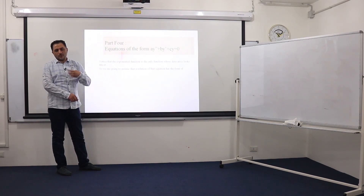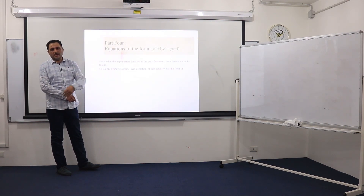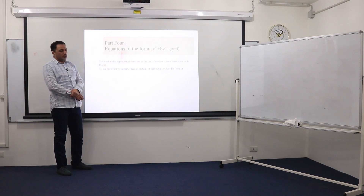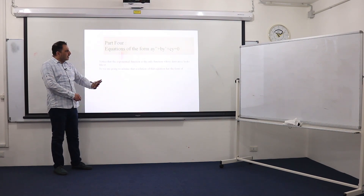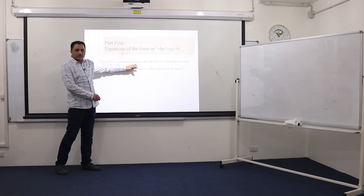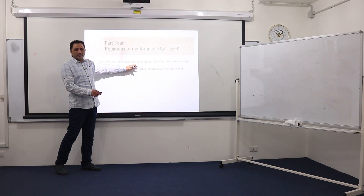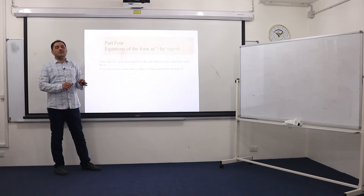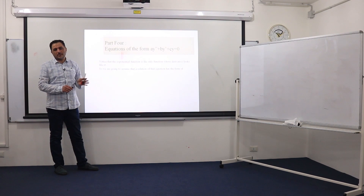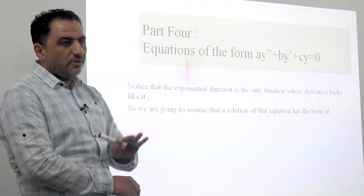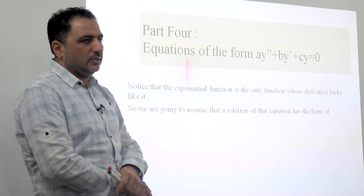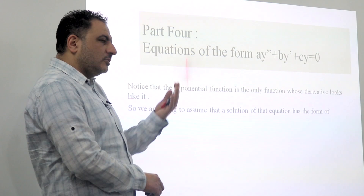Mathematicians tried to solve such equations and noticed that the exponential function has a similar derivative to the function itself. The derivative of e^x is e^x; the derivative of e^(2x) is 2e^(2x) — so they look like each other. They then assumed that the solution of that differential equation has the form y = ke^(rx).